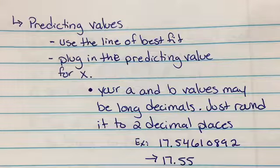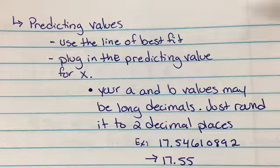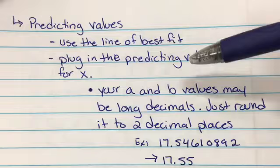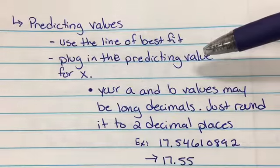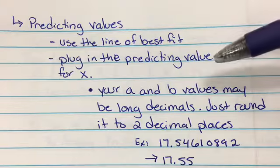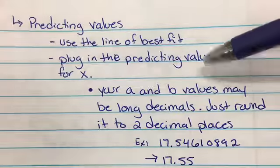Okay, so we use the line of best fit, the y equals ax plus b, which is similar to the y equals mx plus b, but the calculator just chooses to use a. You're going to plug in the value that you're trying to predict for the x, and you'll see what I'm talking about right here when I show you the examples.